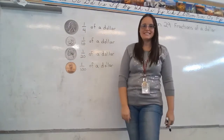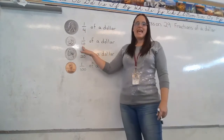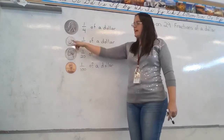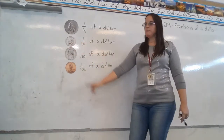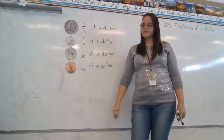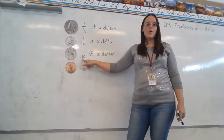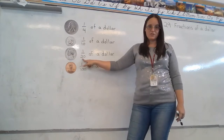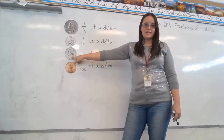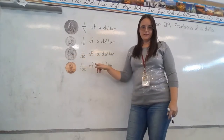Take a look at the dime next. It takes ten dimes to make a dollar. So if we have one dime, what we have is one tenth of a dollar. Then we're going to look at the nickel. It takes twenty nickels to make a dollar. So one nickel is considered one twentieth of a dollar.